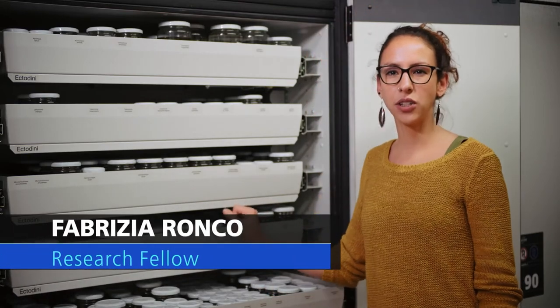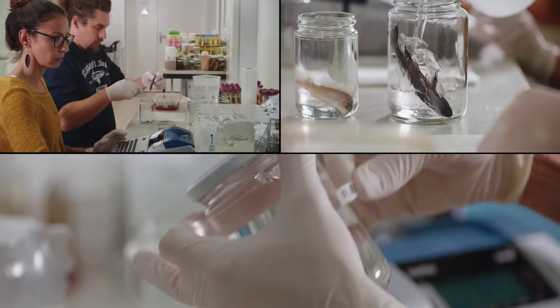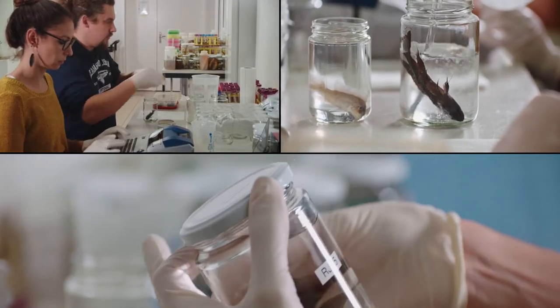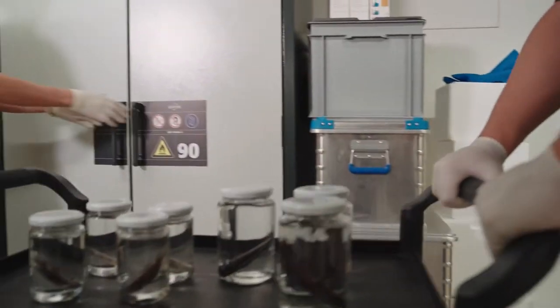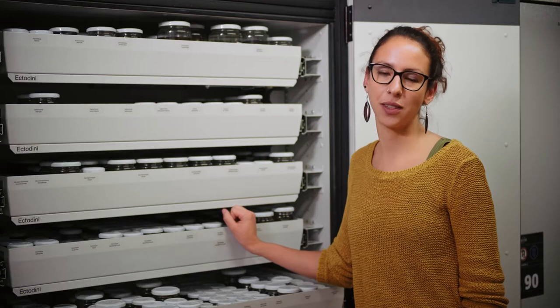Our collection of Lake Tanganyikan cichlids contains about 3,000 specimens. Basically, each of the 200 described species is represented by 10 individuals, and in addition to that we also collected about 50 undescribed species.